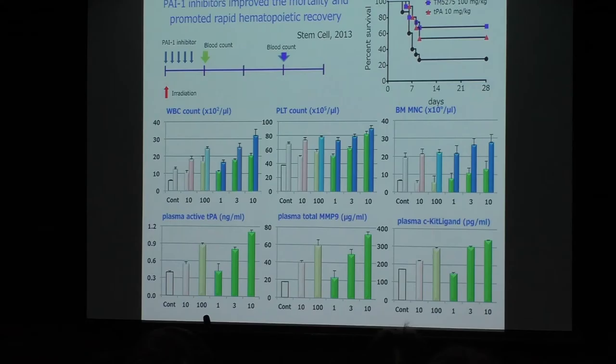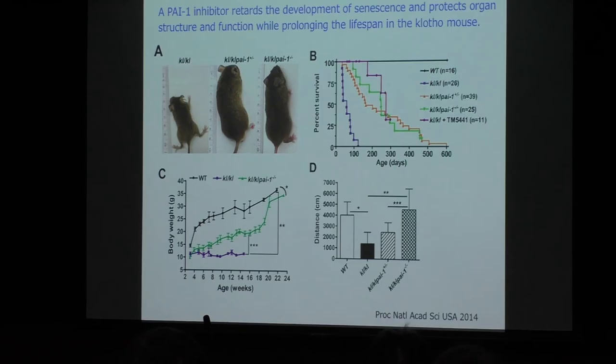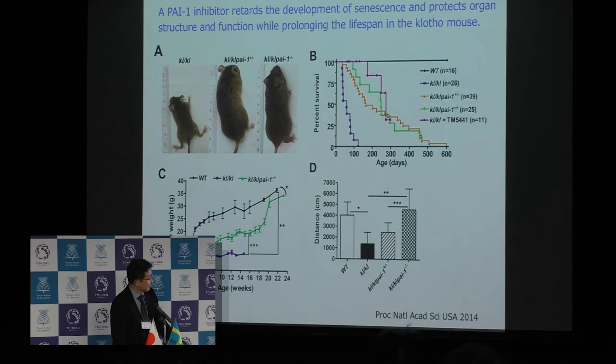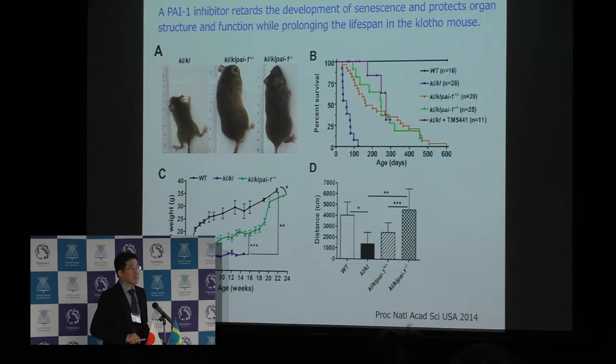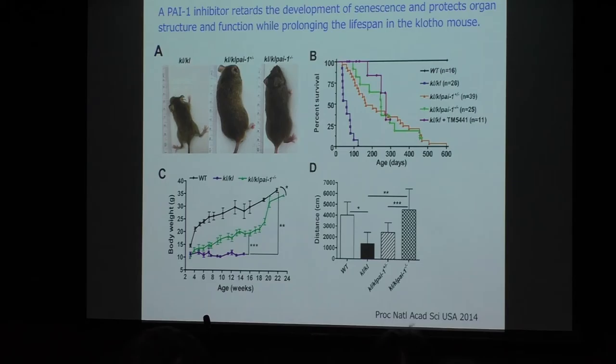In other models of mouse hindlimb ischemia, PAI-1 inhibitors prevented tissue necrosis by promoting endothelial repair. More surprisingly — this is a collaboration with Northwestern University in the United States — PAI-1 inhibitors retarded the development of senescence in the Klotho mouse. The Klotho mouse is characterized by immature growth and a short lifespan, and abnormal age-related pathological changes in many organs including kidney, lung, and bones.